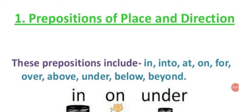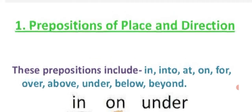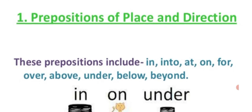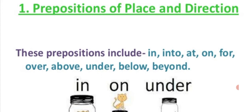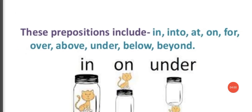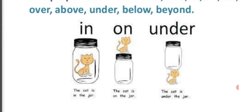First we will cover prepositions of place and direction — you will understand it better through the picture. The words used as prepositions of place and direction include: in, into, at, on, for, over, above, under, below, and beyond. Through the picture: the cat is in the jar — inside the jar — so we use 'in'.